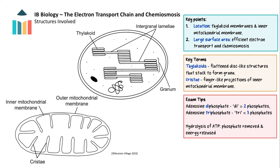In eukaryotic cells, the electron transport chain and chemiosmosis occur in the thylakoid membrane of the chloroplast and in the inner membrane of the mitochondrion. These are adapted to provide a large surface area to make the processes as efficient as possible. In chloroplasts, flattened disc-like structures called thylakoids stack on top of each other to form grana (singular: granum), and the grana are connected by intergranal lamellae so they can work together.